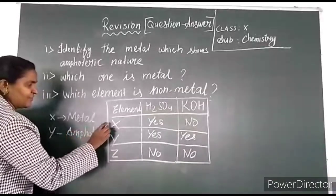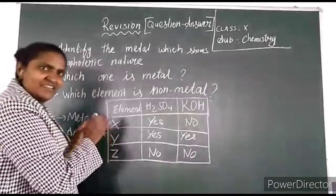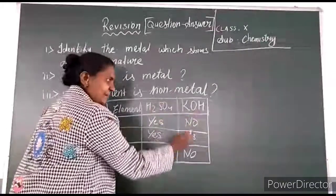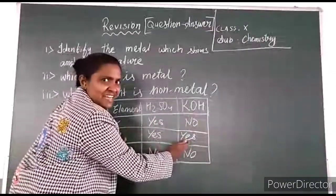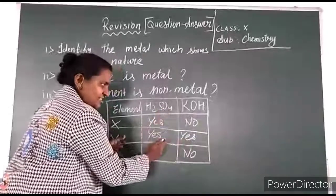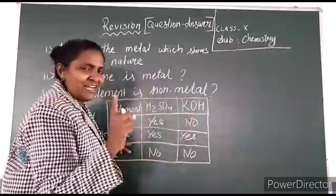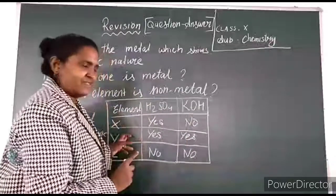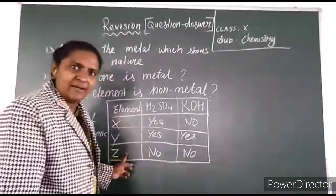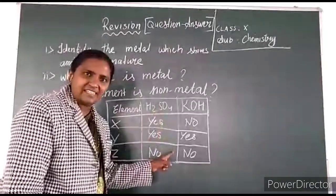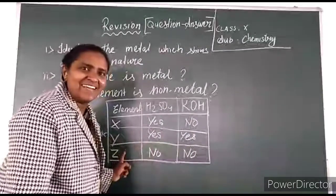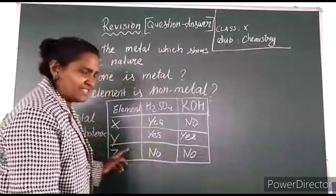What is amphoteric? The metal which reacts with both acid and base. S means the reactivity occurs — reaction occurs. So Y is reactive with acid and also with base, meaning Y has amphoteric nature. What about Z? Z is an element which does not react with the acid and does not react with the base. So Z is a non-metal.